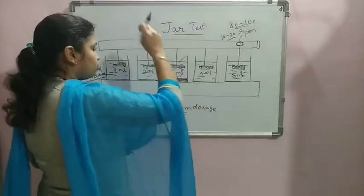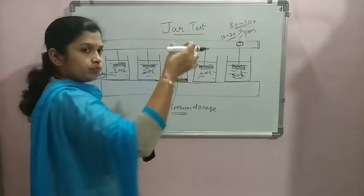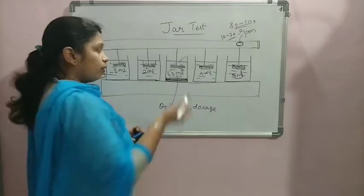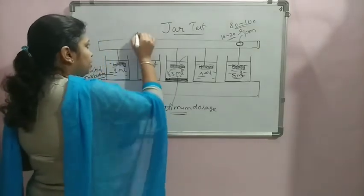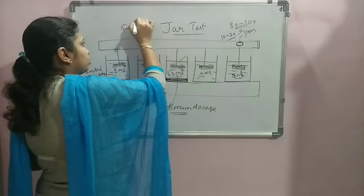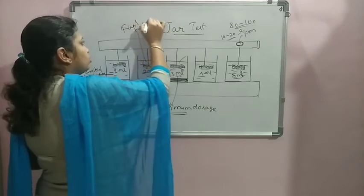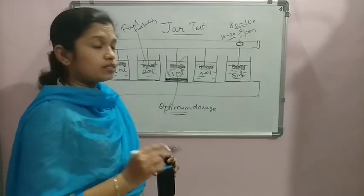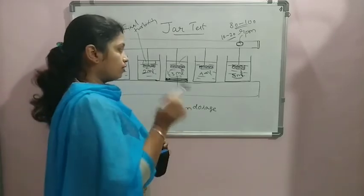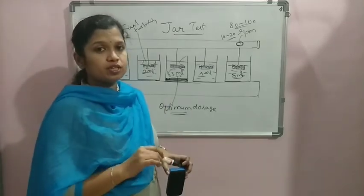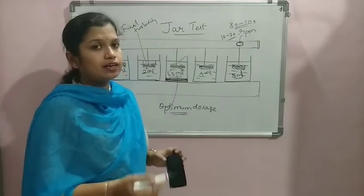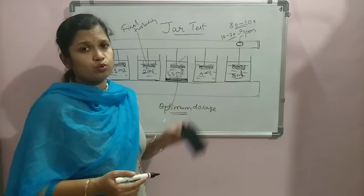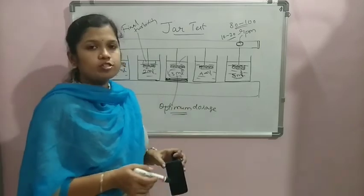Once the initial turbidity is known, after completion of this coagulation process, we are going to take, with no disturbance, just the surface water for around 10 ml and we are going to test the same sample. That is, the final turbidity we are going to check. Which dosage is giving us the maximum removal of the turbidity, that we consider as optimum dosage in actual experimental conditions. Or otherwise, previously we used to find it by just visual methods. This is about the jar test.